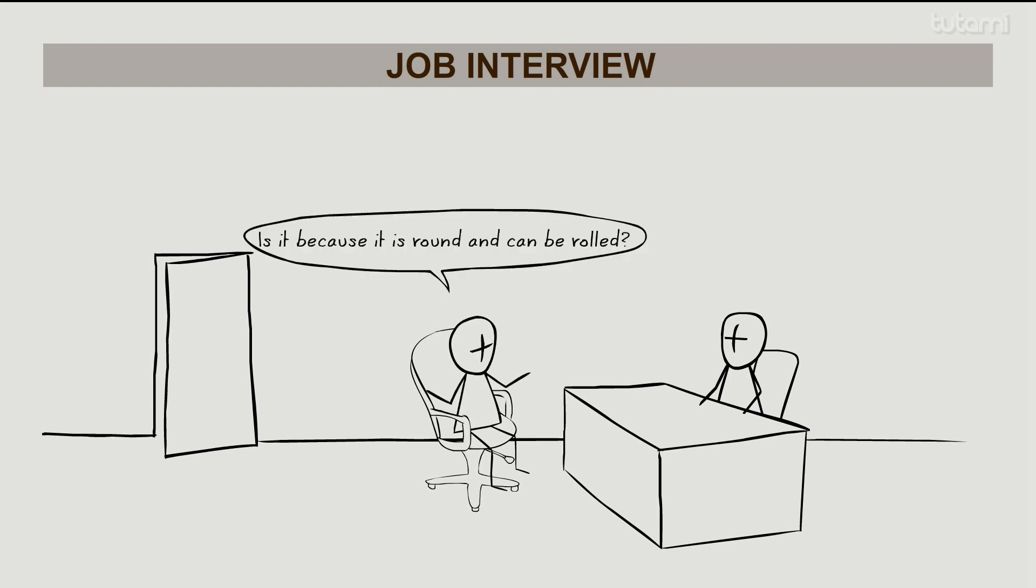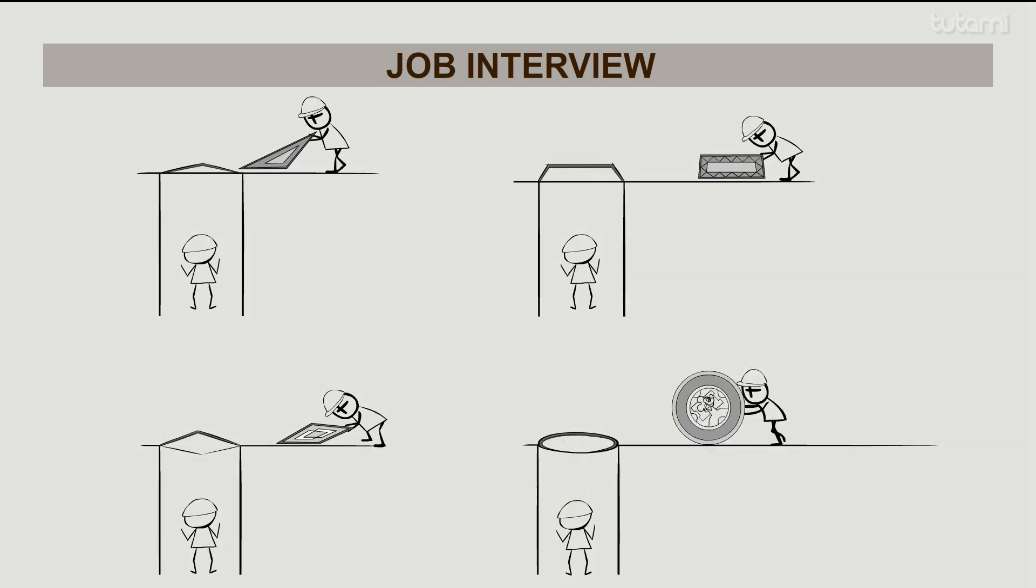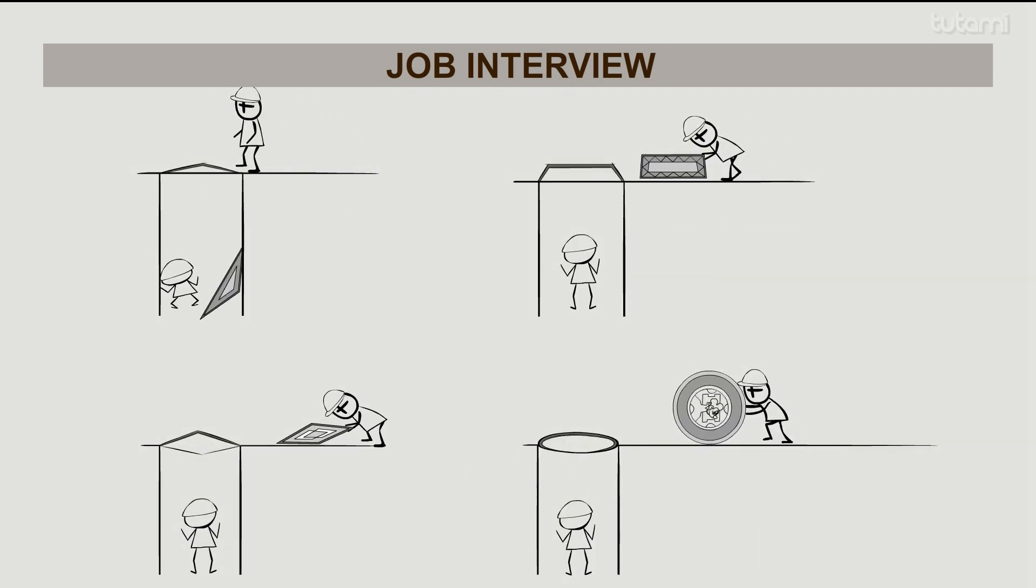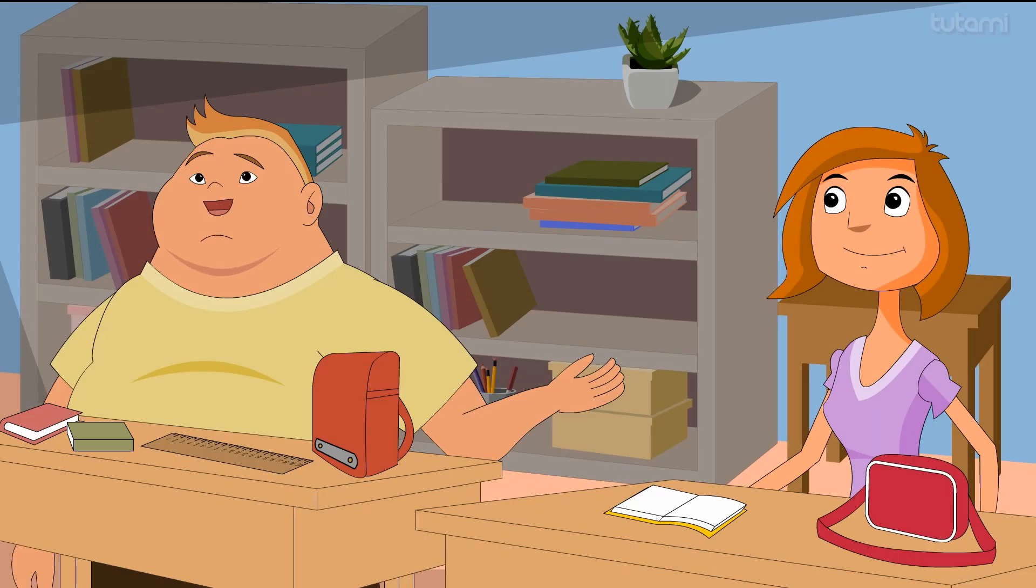I said it was because it's round and it could be rolled. He said, 'Right, but that's actually not the main reason. A circle is actually a perfectly evenly distributed shape and will never allow for the cover to fall all the way down into the sewer, no matter what angle you place it in.' 'Well, did you get the job?'